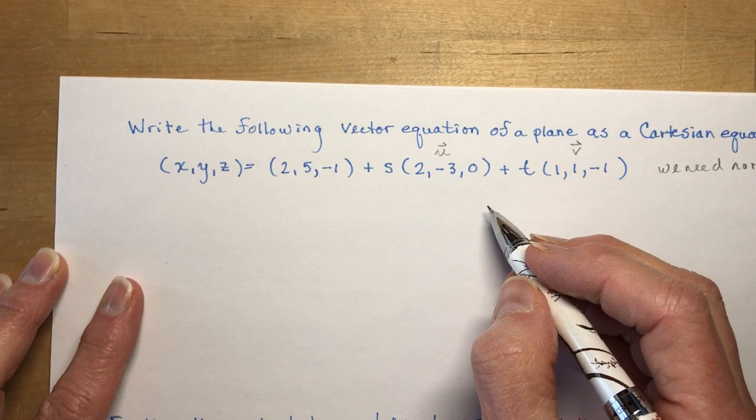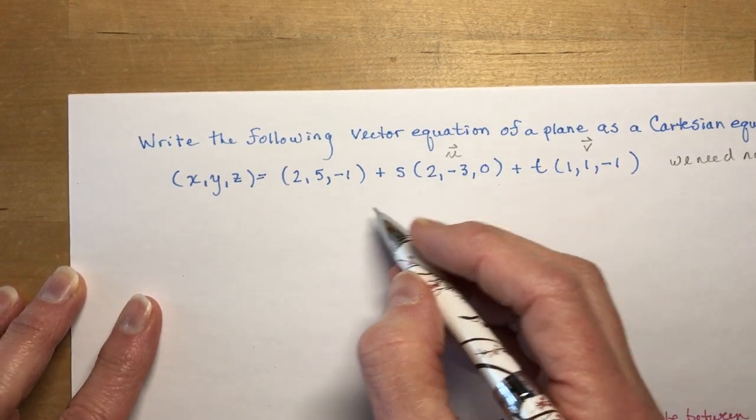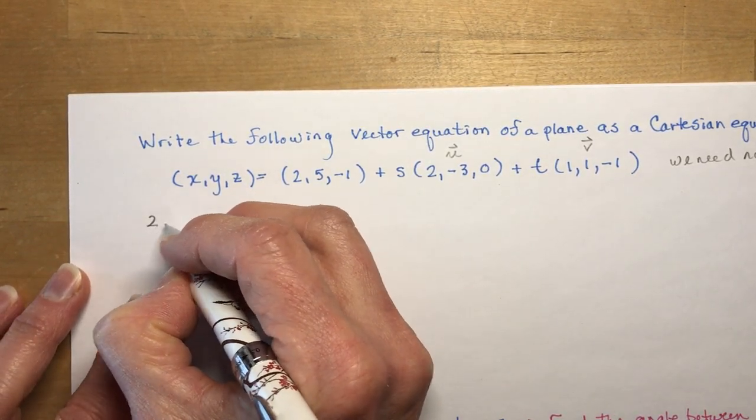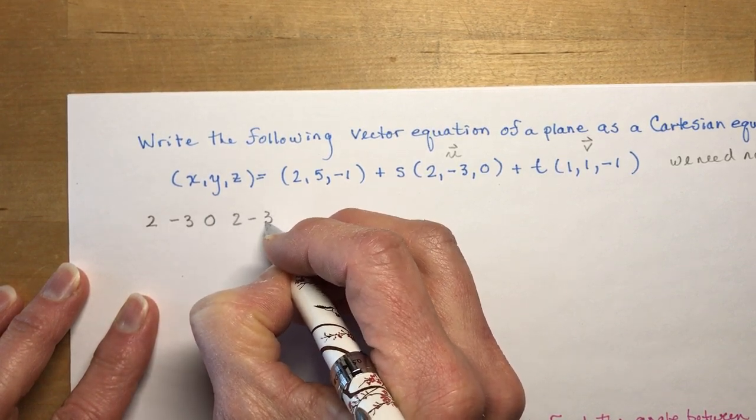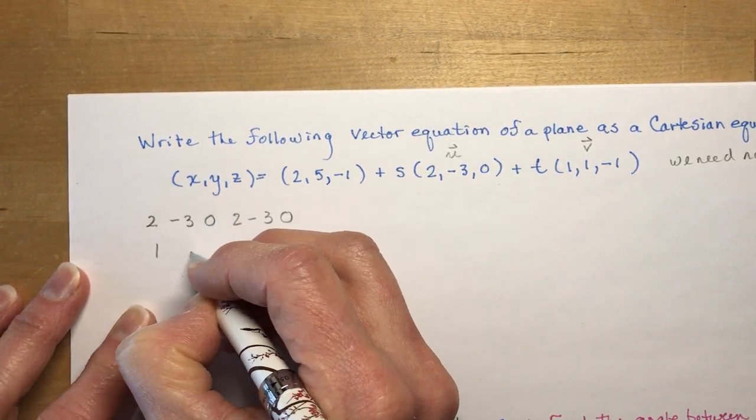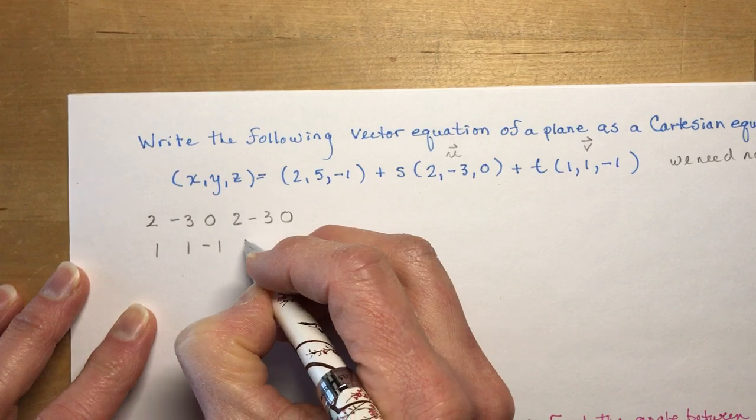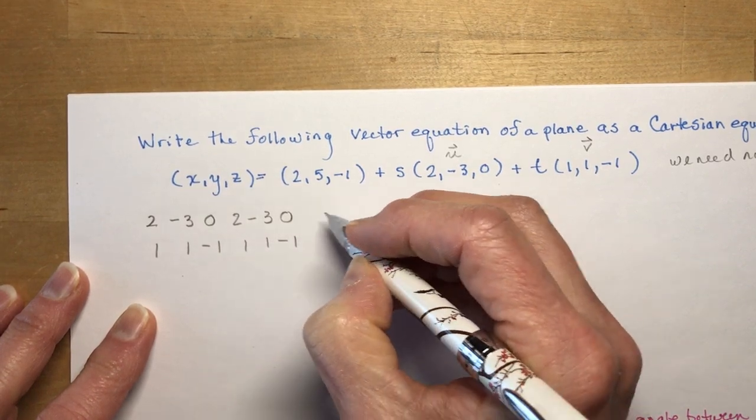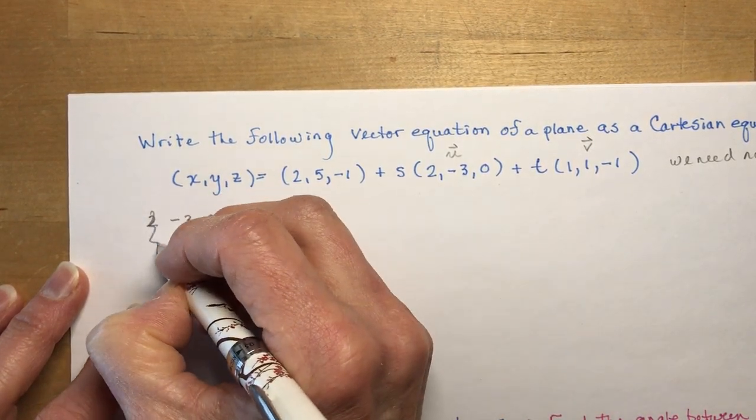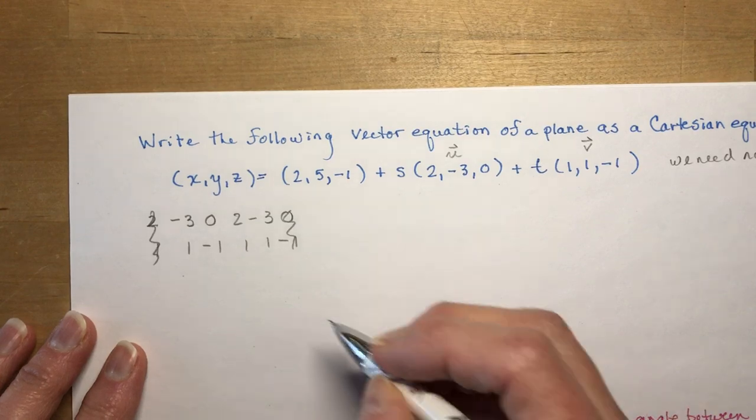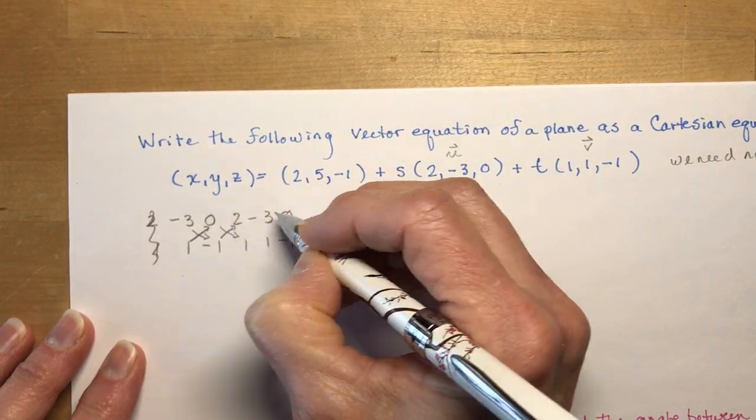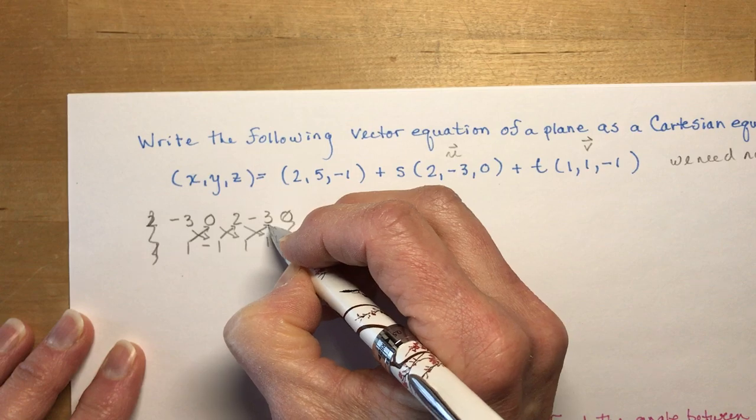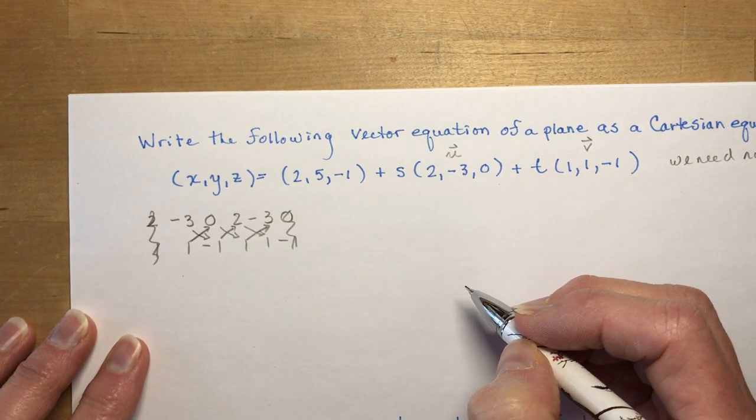So remember how to find a cross product. You write out the vectors twice. 2, minus 3, 0. 2, minus 3, 0. 1, 1, minus 1. 1, 1, minus 1. And we cut out these two like that. We cross them out. And then we do our crosses here with these numbers. So we multiply on the way down and subtract on the way back.